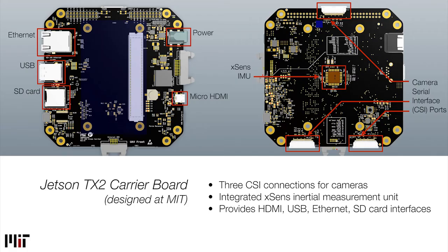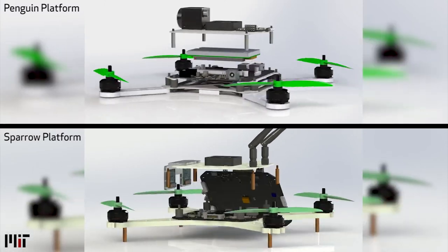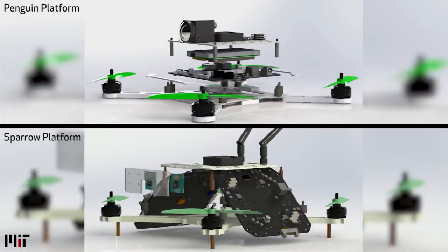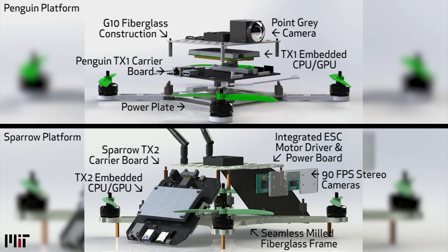We designed in-house a Jetson carrier board and a drone power board. The Jetson carrier board is 4 inches by 4 inches, housing an onboard IMU, three high-speed CSI camera connections, along with standard USB, mini HDMI, micro SD, and ethernet connections. We have also built a power board with four embedded electronic speed controllers and power distribution systems. The CAD models of both drones are rendered here, showing the integrated components of each drone, with NVIDIA Jetson compute modules, Jetson carrier boards, power boards, cameras, and mechanical design shown together.